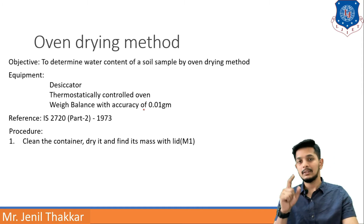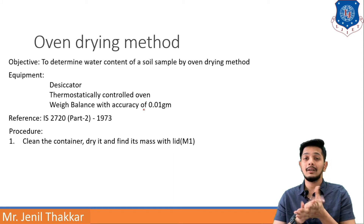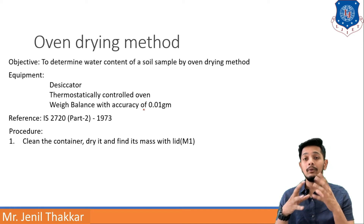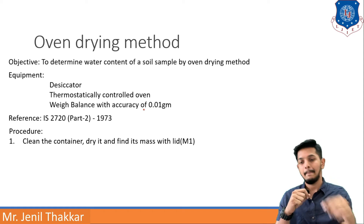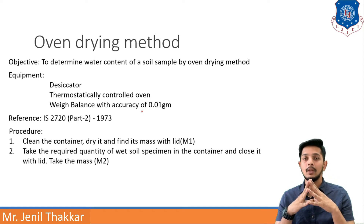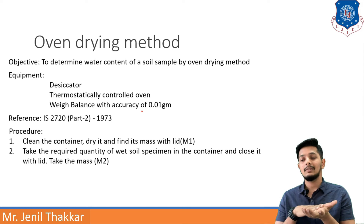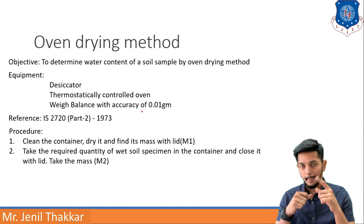Procedure: First, clean the container, dry it, and find its mass — this empty mass is M1. Then take the required quantity of wet soil specimen in the container. The mass of the container plus wet soil together will be M2.